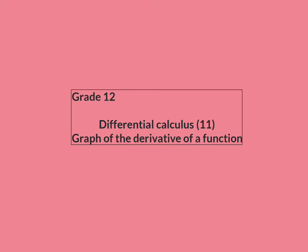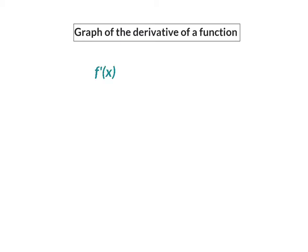In this lesson we're going to have a look at the graph of the derivative of a function and what information we can gather from this graph about the original function as well as the derivative of the function. When we have a look at the graph of the derivative of a function, the most important thing to remember is that the derivative shows the value of the gradient of the original function.